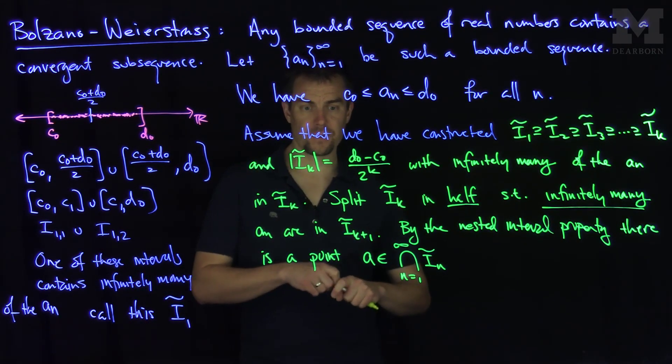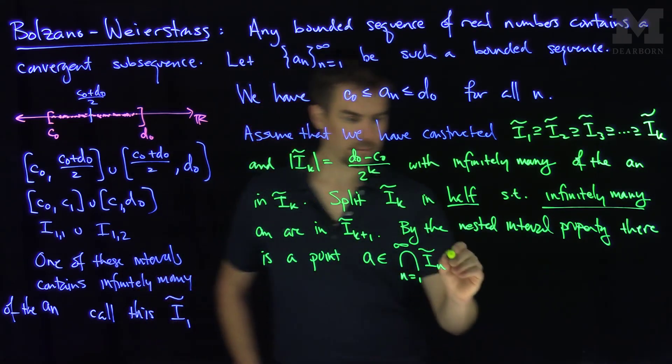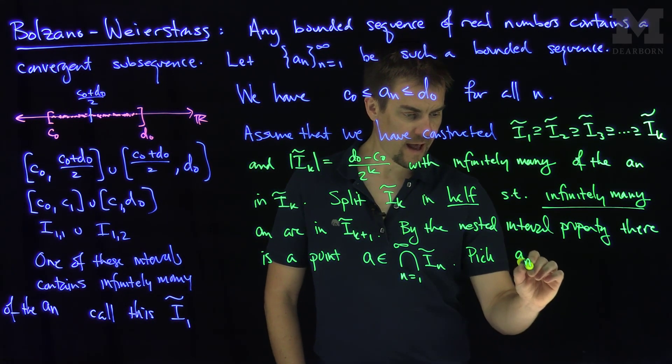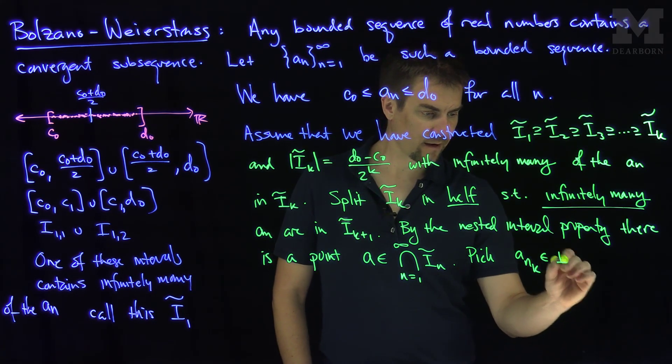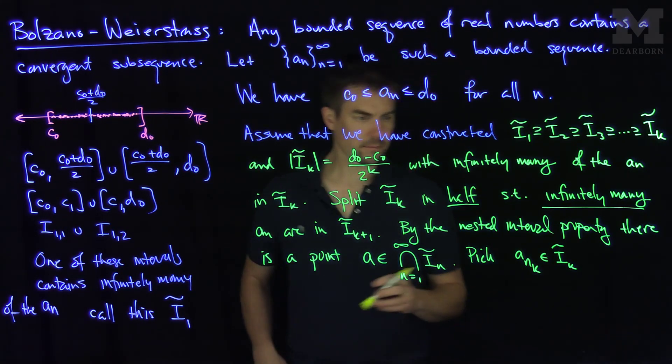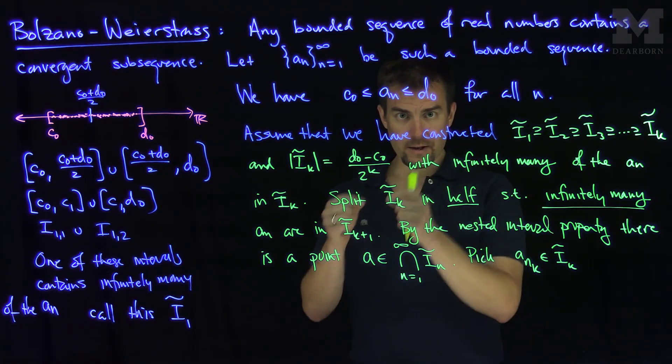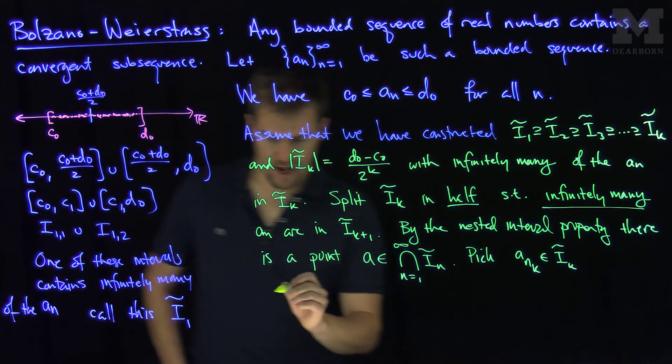And so now if we look at this subsequence, so pick ank, an element of ik tilde. So we can select a point ank in each of these in tildes, and now what can we say?